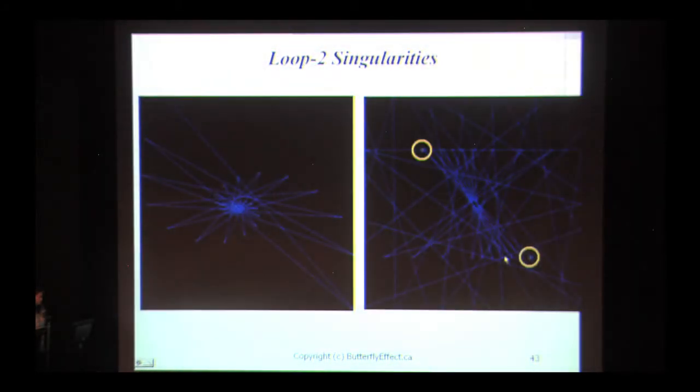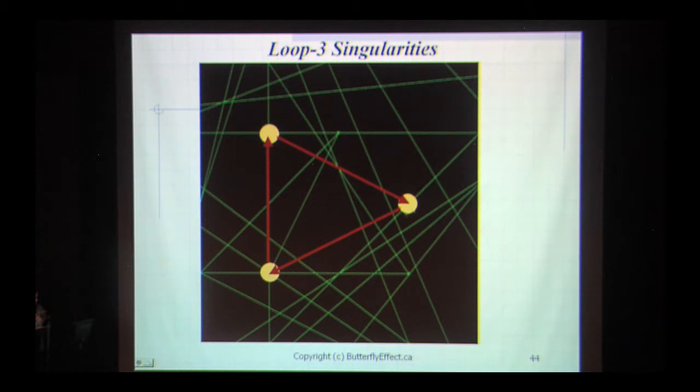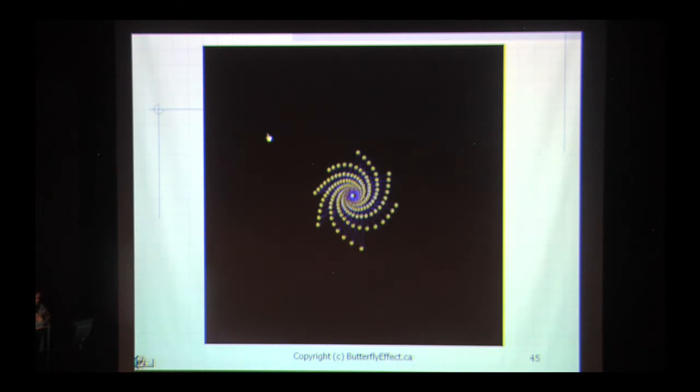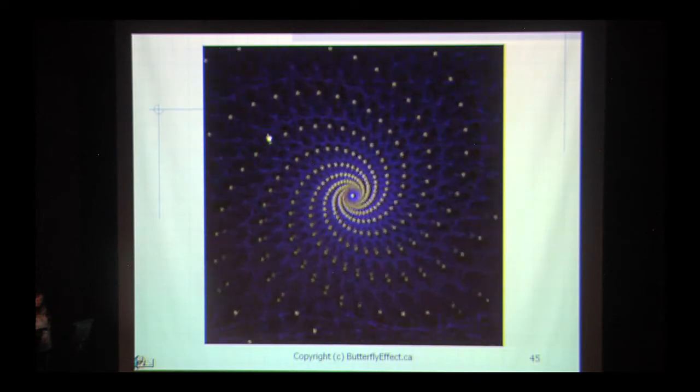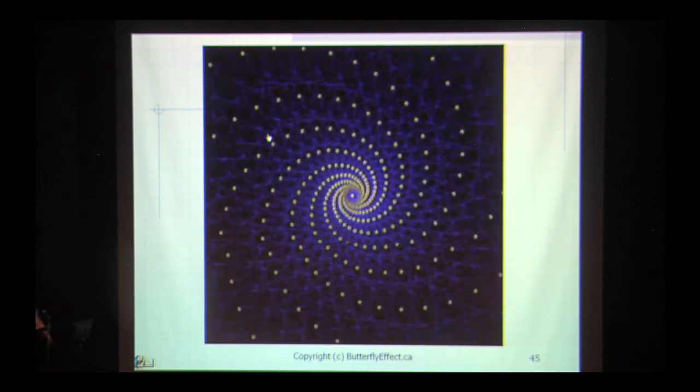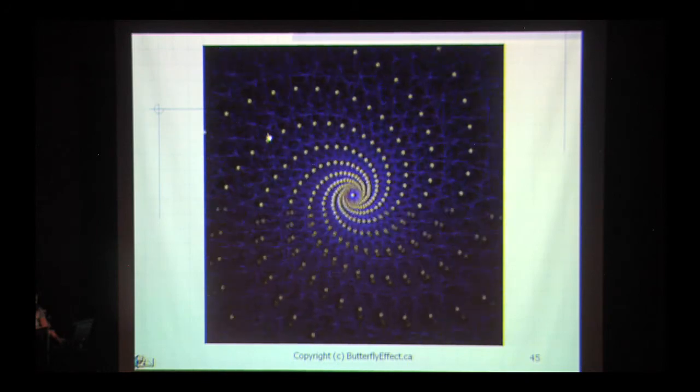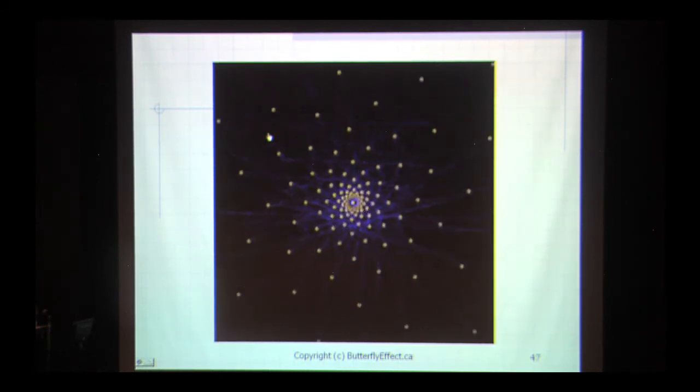For example, a loop two singularity ends by looping between two distinct points forever. A loop three singularity ends by looping between three points endlessly and so on. So what is the significance of these loop singularities? Here are a few more loop singularities.